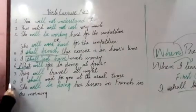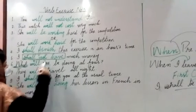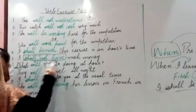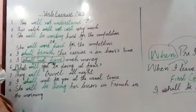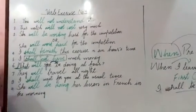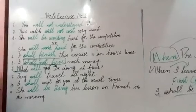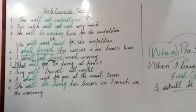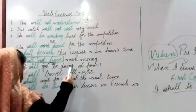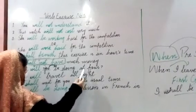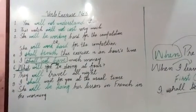In future continuous tense, the first helping verb is the main helping verb, and the second is the supporting helping verb. Then we use the first form of the verb followed by ING.